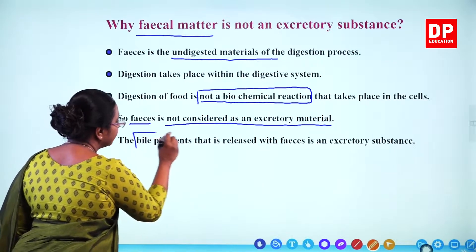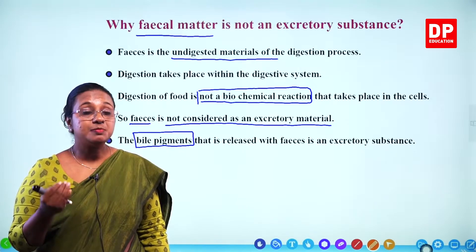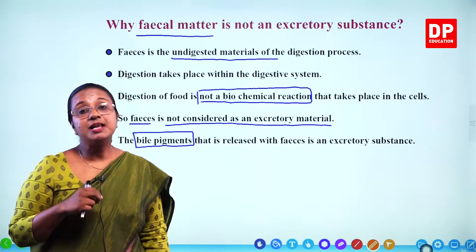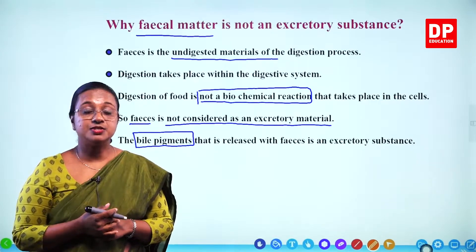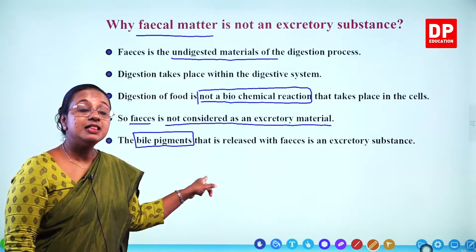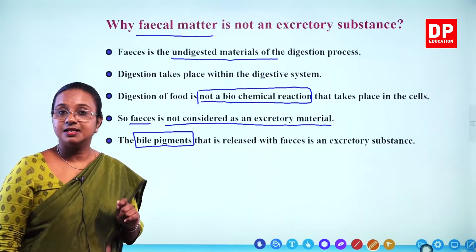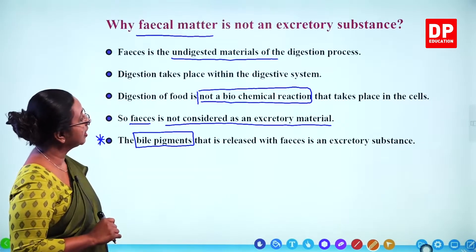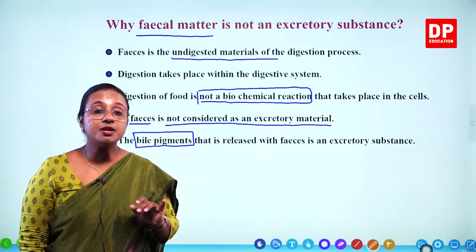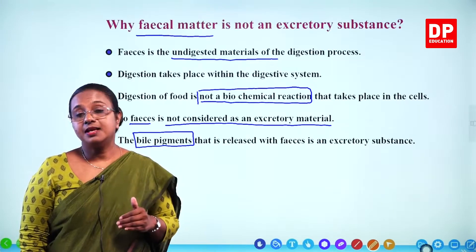However, there are bile pigments. Bile is produced in the liver, stored in the gallbladder, and secreted into the small intestine. The bile pigments present in bile are added to faeces and excreted with faeces. Because they are produced within the body during metabolic processes, they are excretory products. So the bile pigments released with faeces are excretory substances.